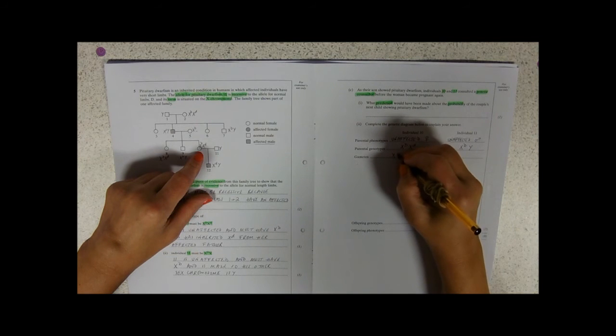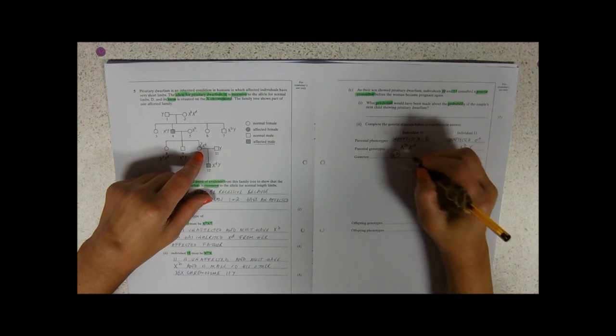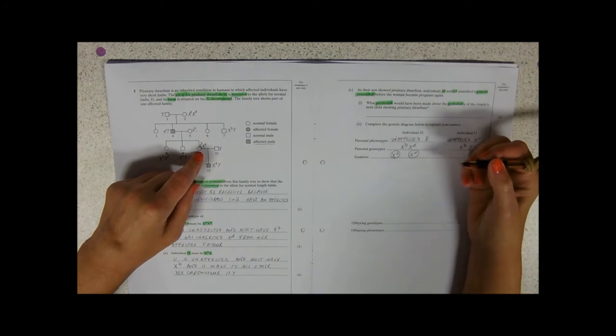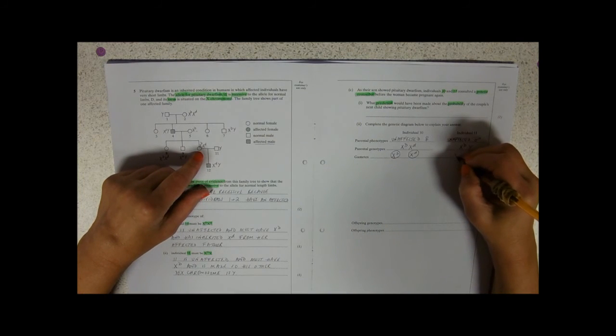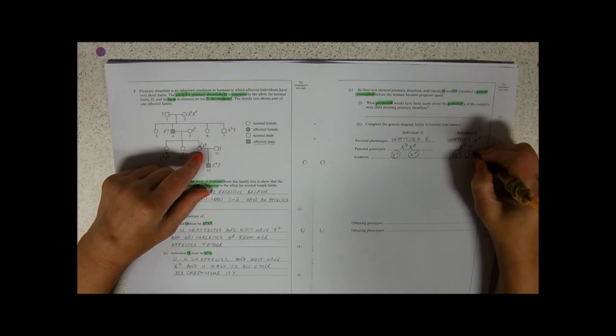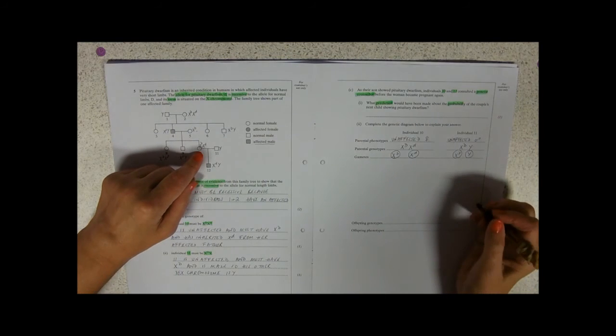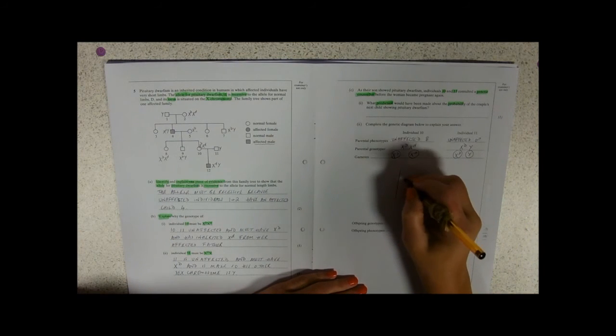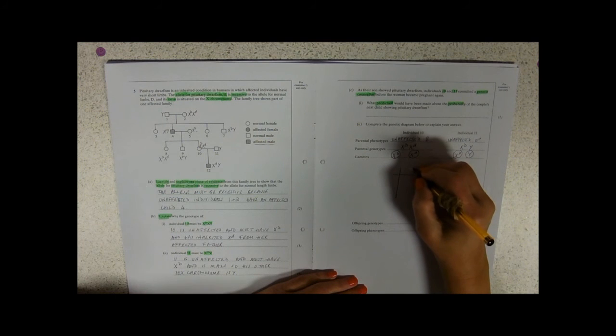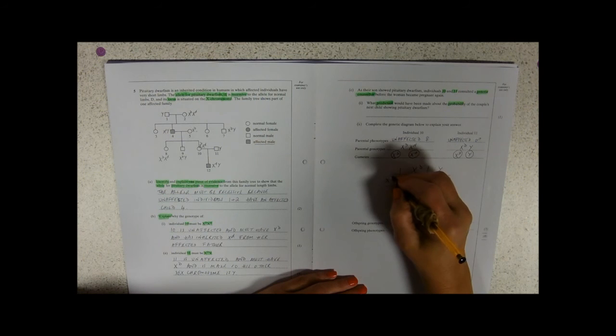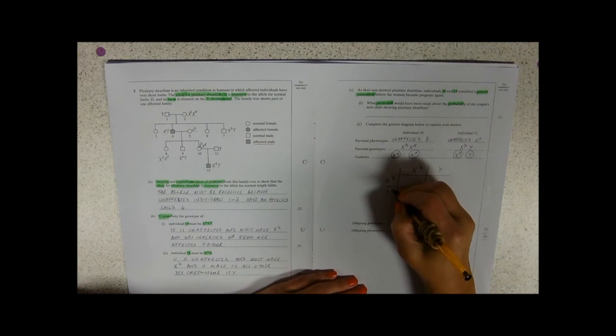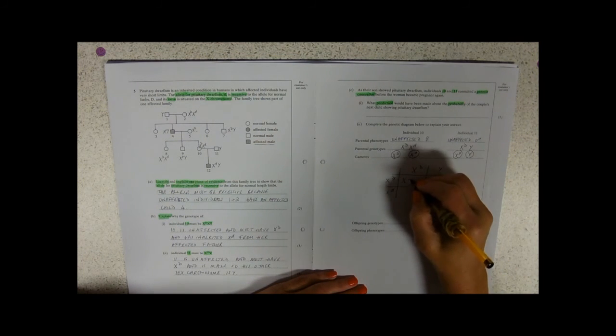So gametes. She's producing X big D gametes and X little d gametes. And notice in sex-linked crosses, you do have to put the X and Y chromosomes in to your gametes and all the way through. So the gender is also going to be important in your ratio at the end. So I'm going to stick these into a Punnett square. X big D, Y. X big D, X little d. So my first one, I like to put my sex chromosomes in first.